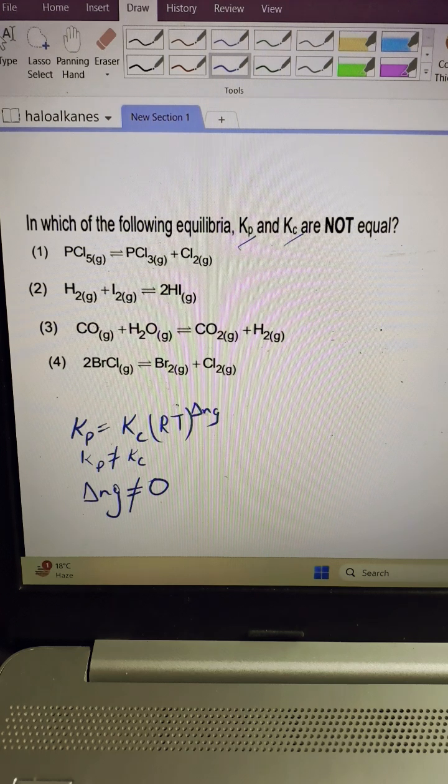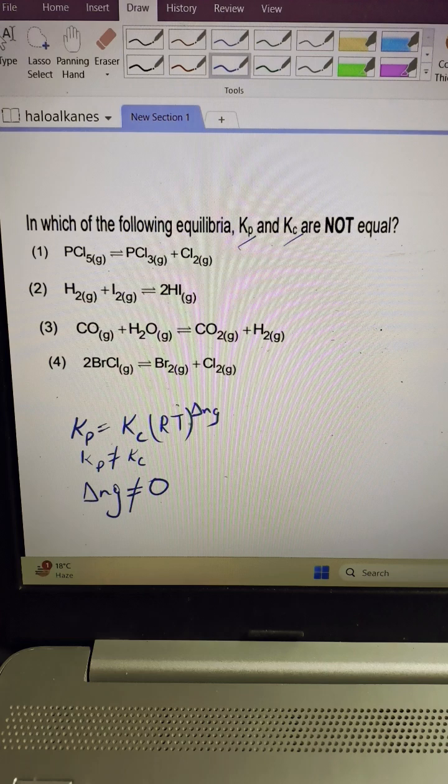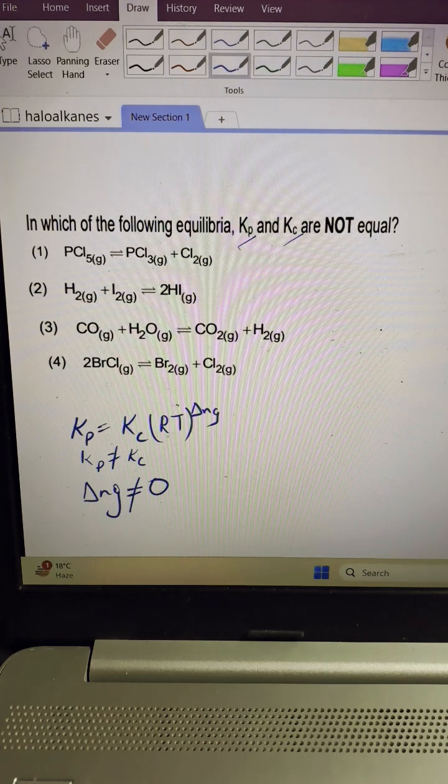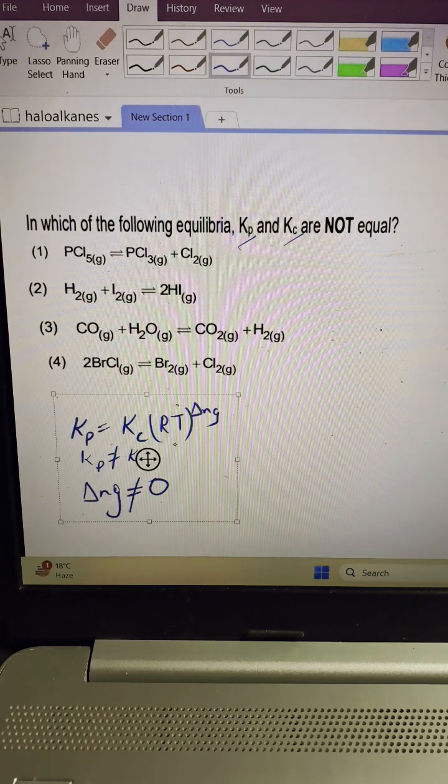If Kp and Kc are not equal, delta Ng should not be equal to 0. Why? Because RT should not be 1. What is delta Ng?